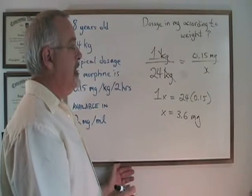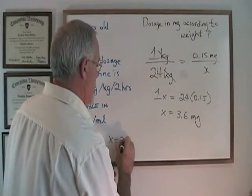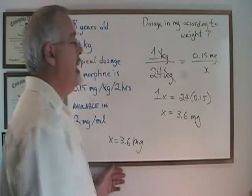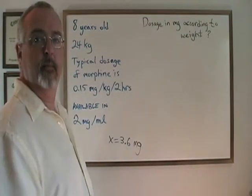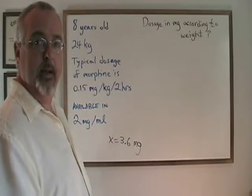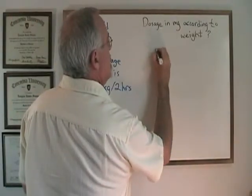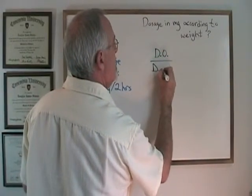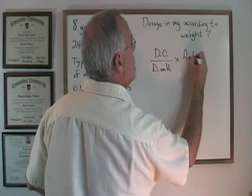We have done our first calculation. I will write the answer here and make room to do the next step. We have to calculate how many milliliters we need. The formula is: dose ordered over dose on hand, times amount on hand.